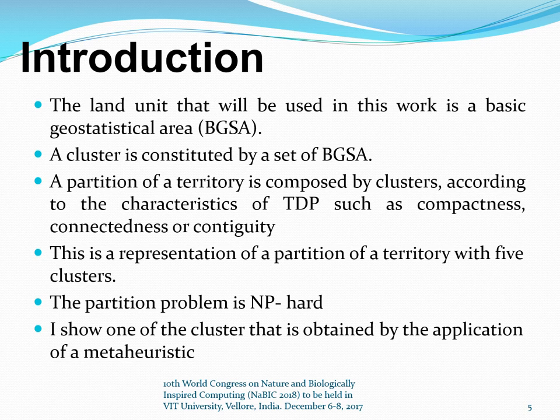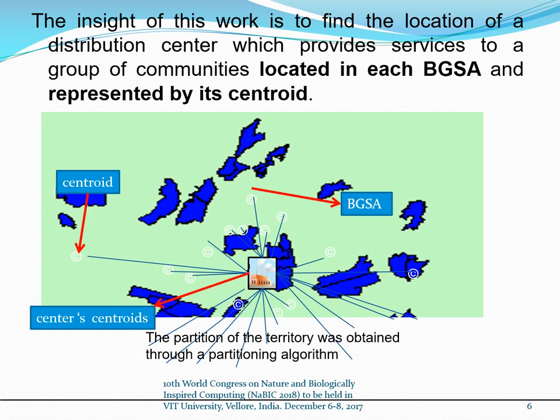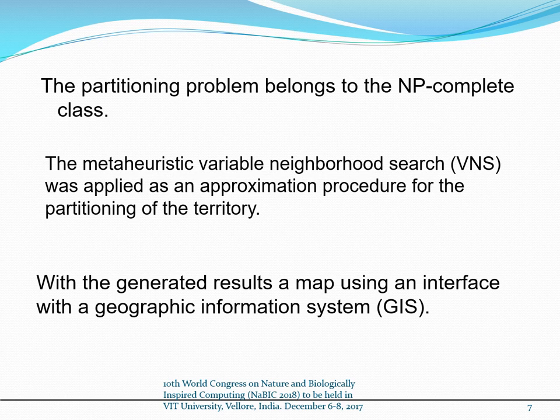The partition problem is NP-hard. The insight of this work is to find the location of a distribution center which provides services to a group of communities located in each basic geostatistical area, represented by each centroid. The partition of the territory was obtained through a partition algorithm. The meta-heuristic variable neighborhood search was applied as an approximation procedure for the partitioning of the territory, and the results were used to generate a map using an interface with a geographic information system.